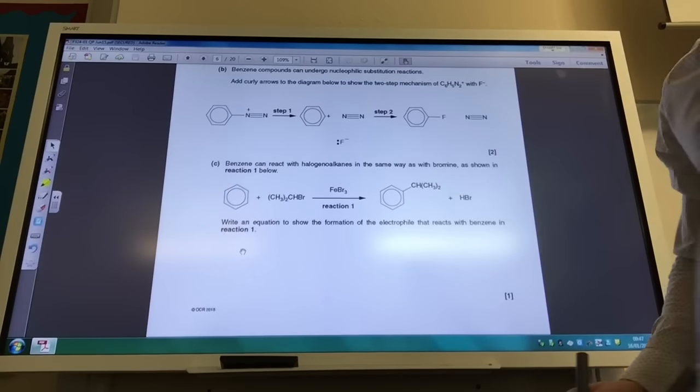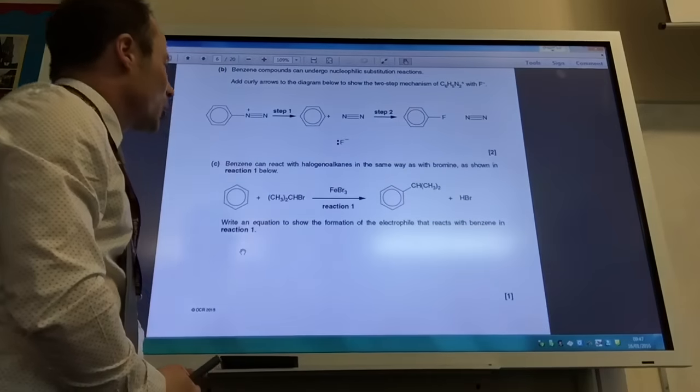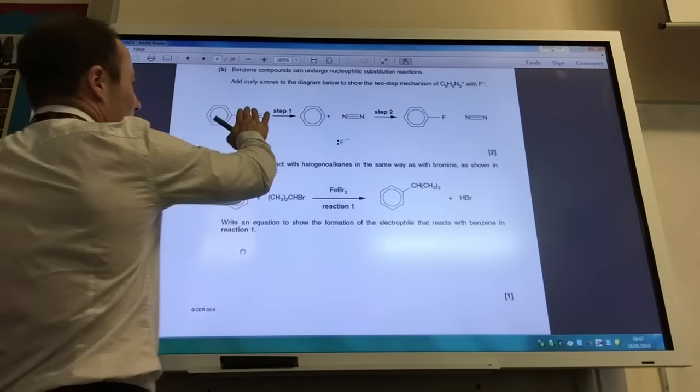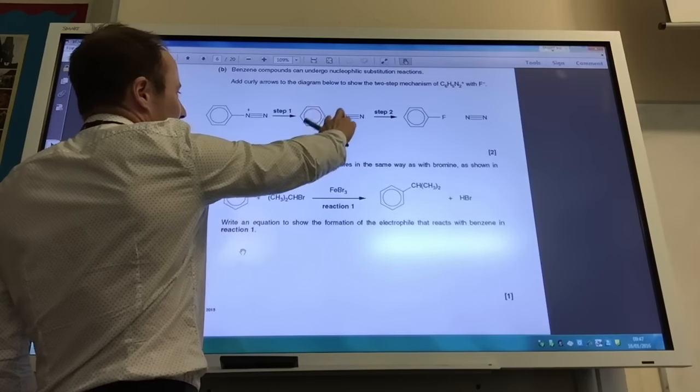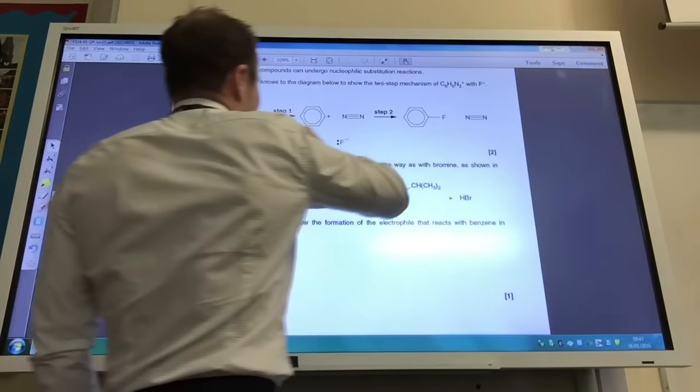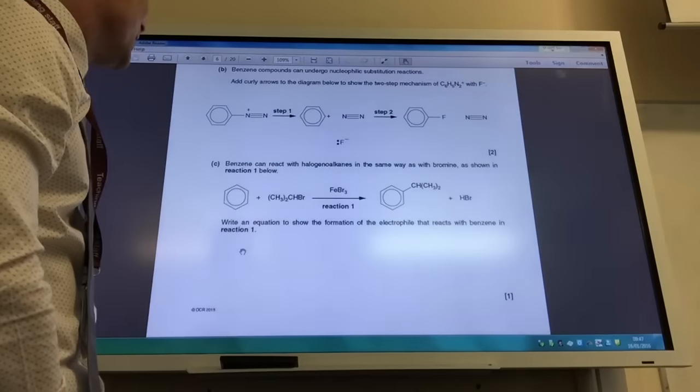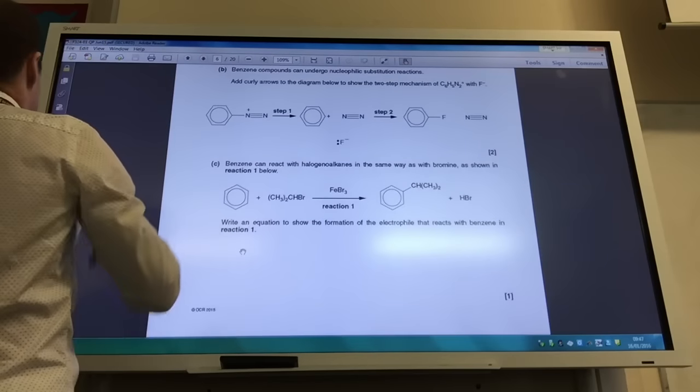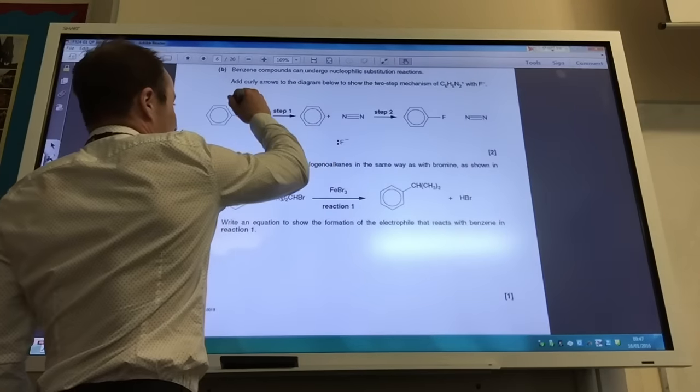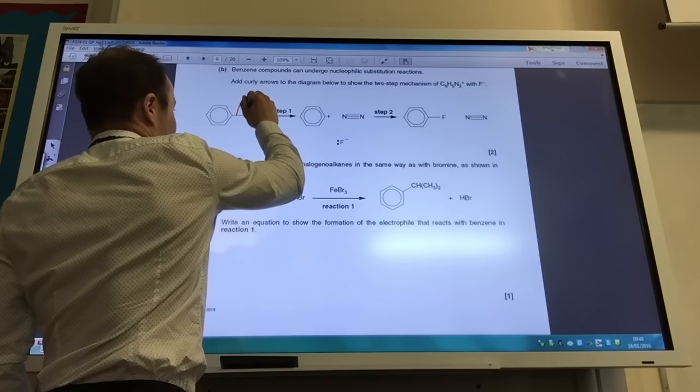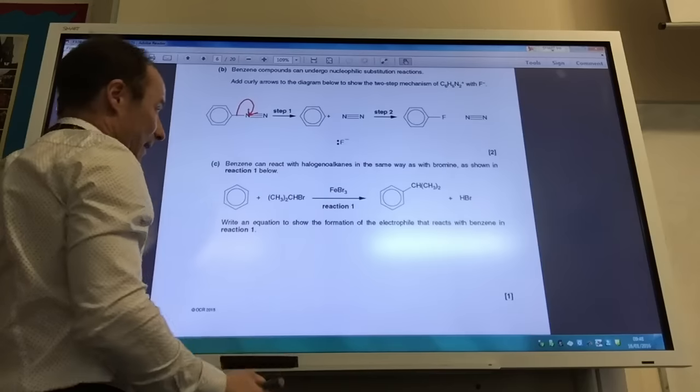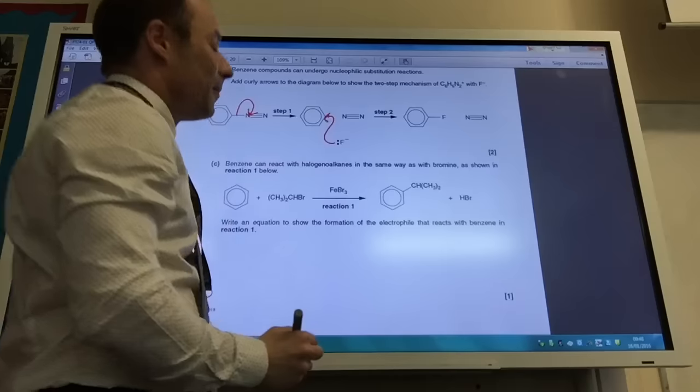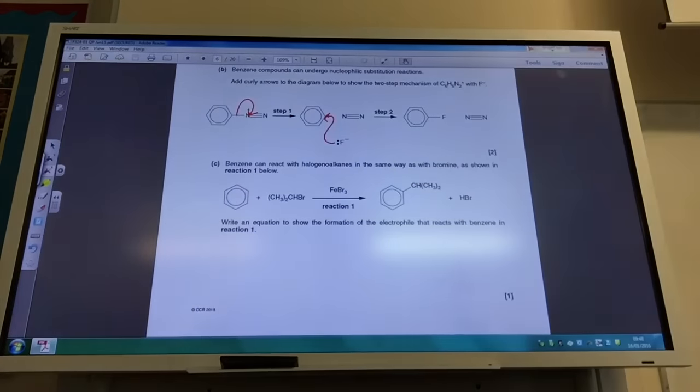Okay so interesting question now. We've got benzene compounds can undergo nucleophilic substitution reactions, and it's given me an example which you probably haven't seen before, in which this guy leads in step one to produce benzene with a positive charge, and then I have a nucleophile coming in to replace where the N2 group was. Add curly arrows to show the two-step mechanism. So going from there to there, hopefully you can see that my electrons have gone onto that nitrogen because the plus charge has disappeared and it's left benzene with a plus. And going from there to there, this guy has attacked that carbon atom on the benzene ring there.